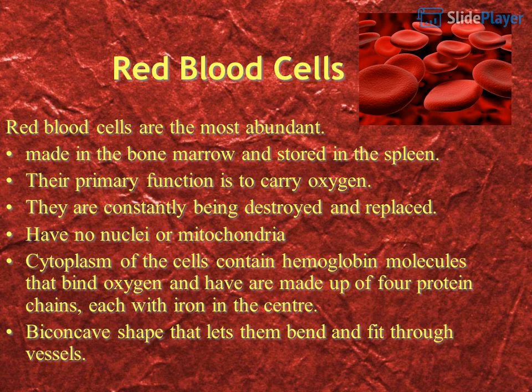Red blood cells are the most abundant. They are made in the bone marrow and stored in the spleen. Their primary function is to carry oxygen. They are constantly being destroyed and replaced, and have no nuclei or mitochondria.